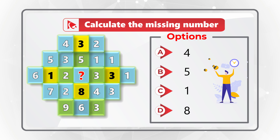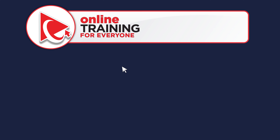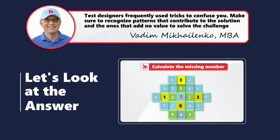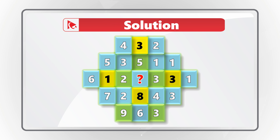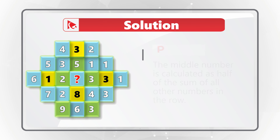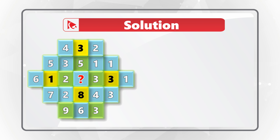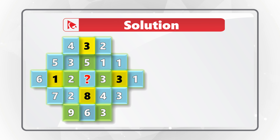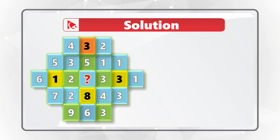Here's an analytical skills and pattern recognition question which might trick you into the wrong answer. You're presented with an unusual shape containing multiple boxes with numbers inside. You need to calculate the missing number represented by the question mark in the middle of the box. There are four choices — A, B, C, and D. Give yourself 20 to 30 seconds, perhaps pausing the video to find the solution.